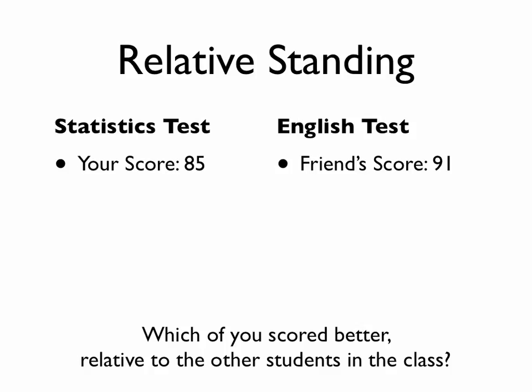In order to answer that question, we need to know more information. The mean of all scores helps. The mean score of the statistics test was 77; the mean of the English test was 82, which means both of you scored above the mean. Your score was 85, which is 8 points above the mean; your friend scored 9 points above the mean.